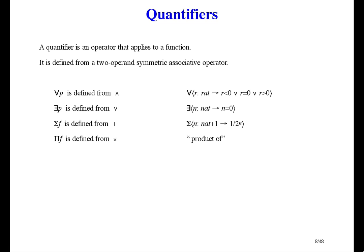The Greek capital Pi is the product quantifier. It applies to functions that have a numeric result and its result is numeric. The result can be thought of as applying the function to all its domain elements and then multiplying all those results together. Here's an example: the product as N varies over NAT plus 1 of that expression. The result, by the way, is pi over 2.